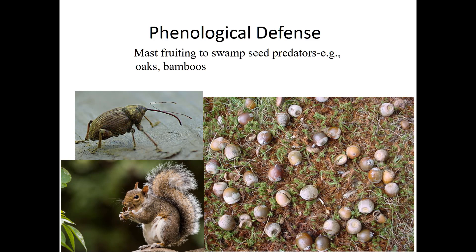Squirrels might die off in between because they run out of food. And then when the red oaks produce their fruits again, they produce so many that there's no possible way the squirrels could eat them all. That's masting.